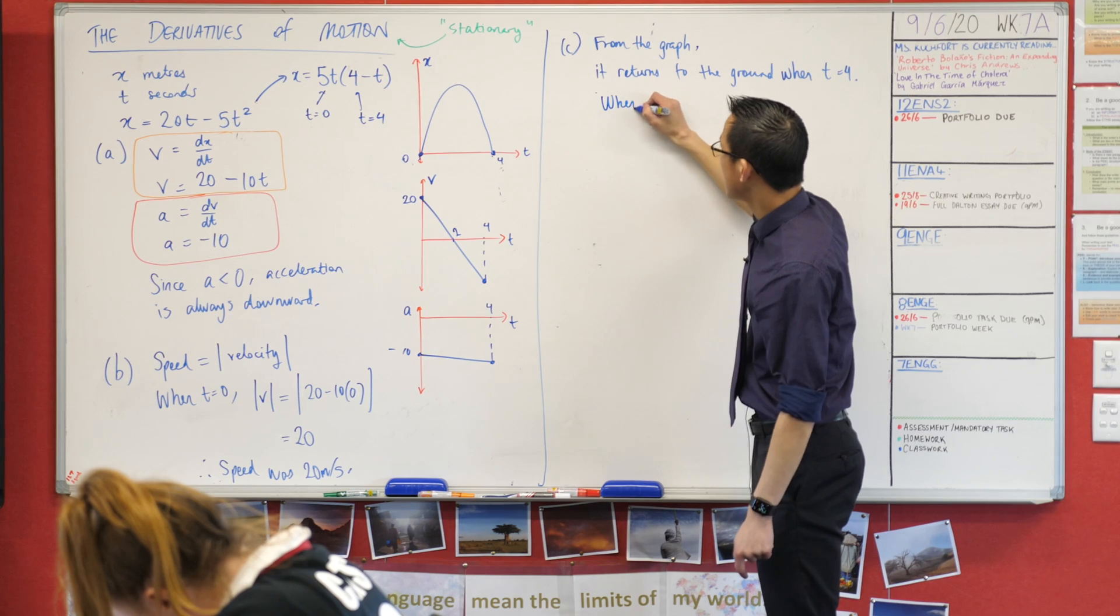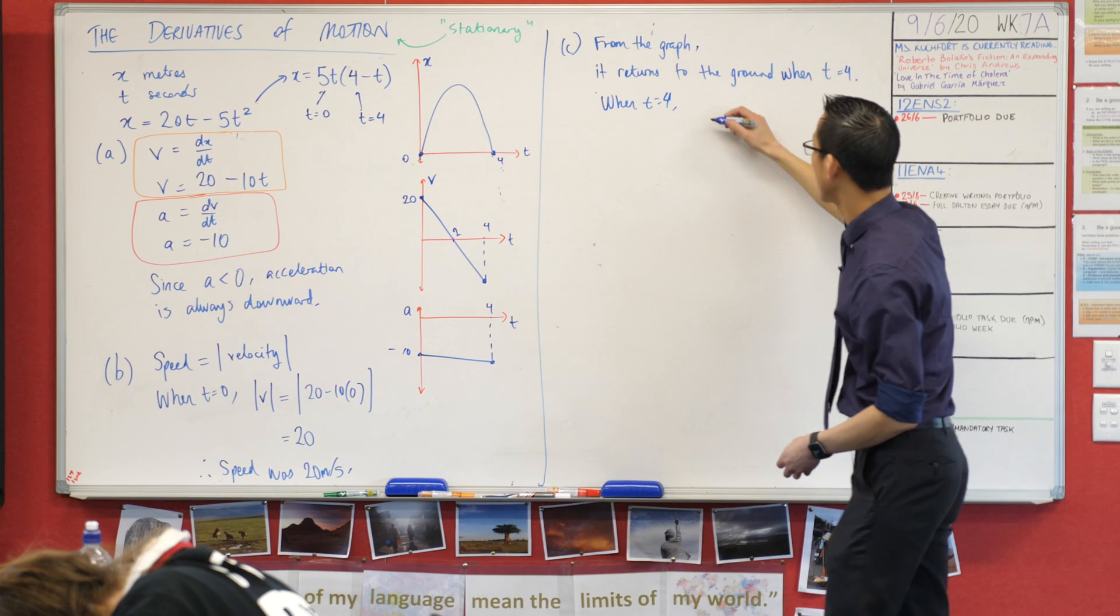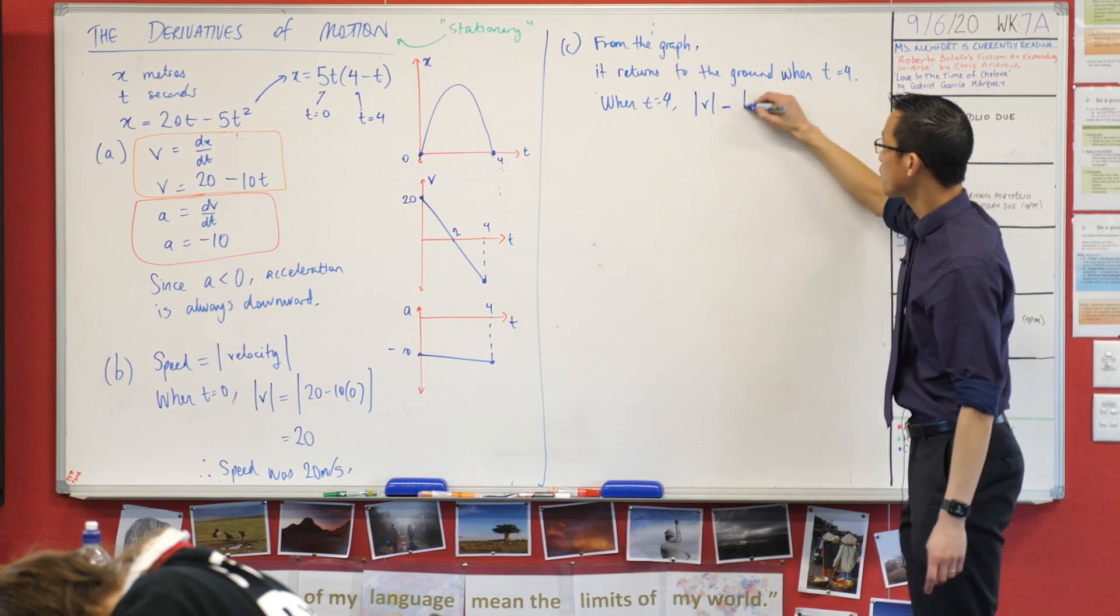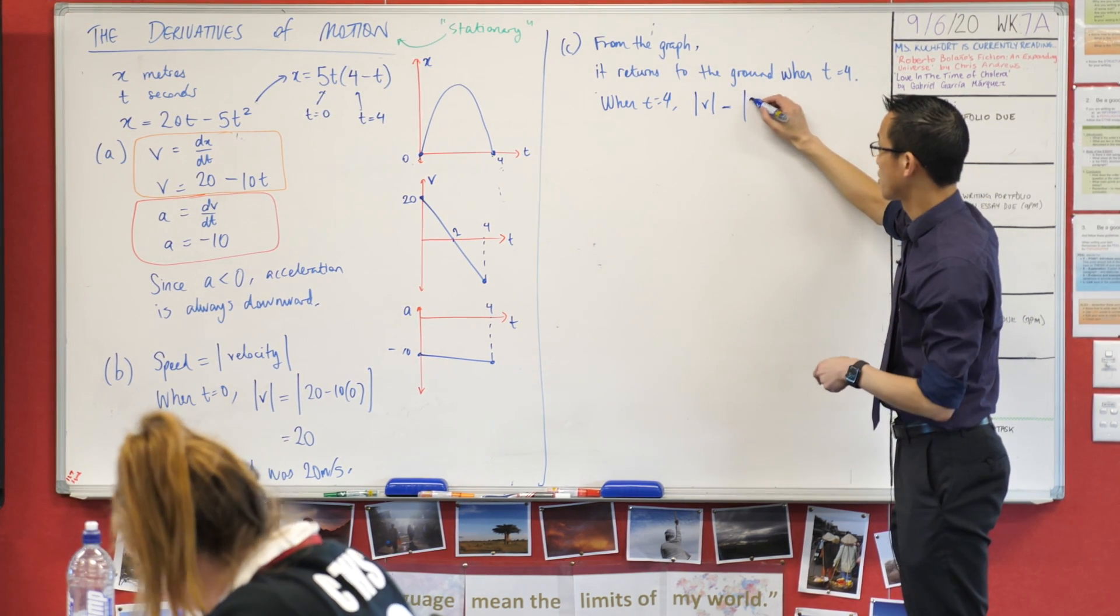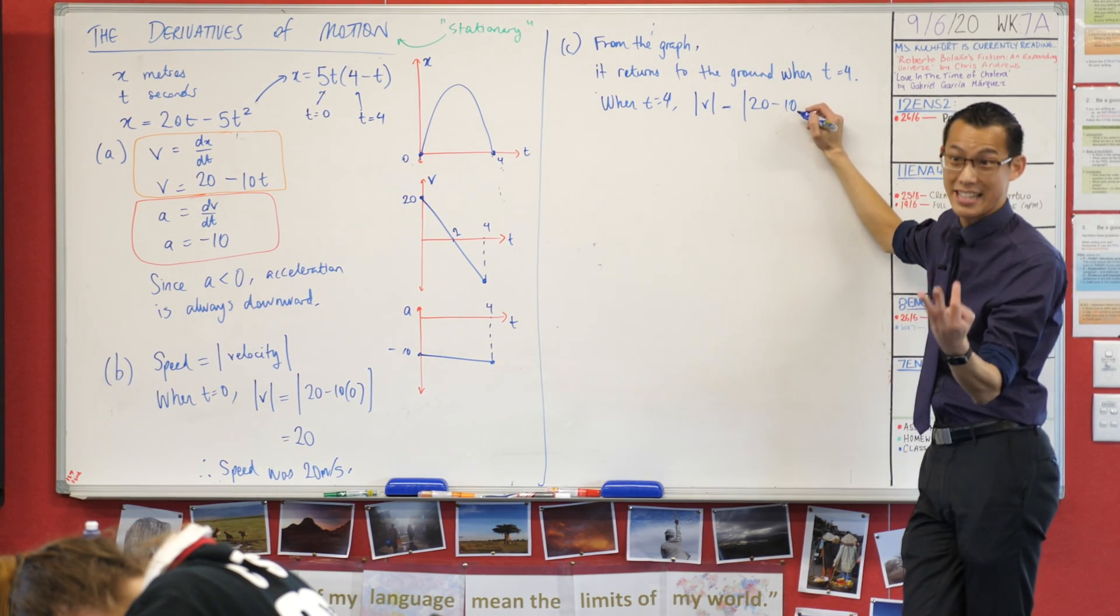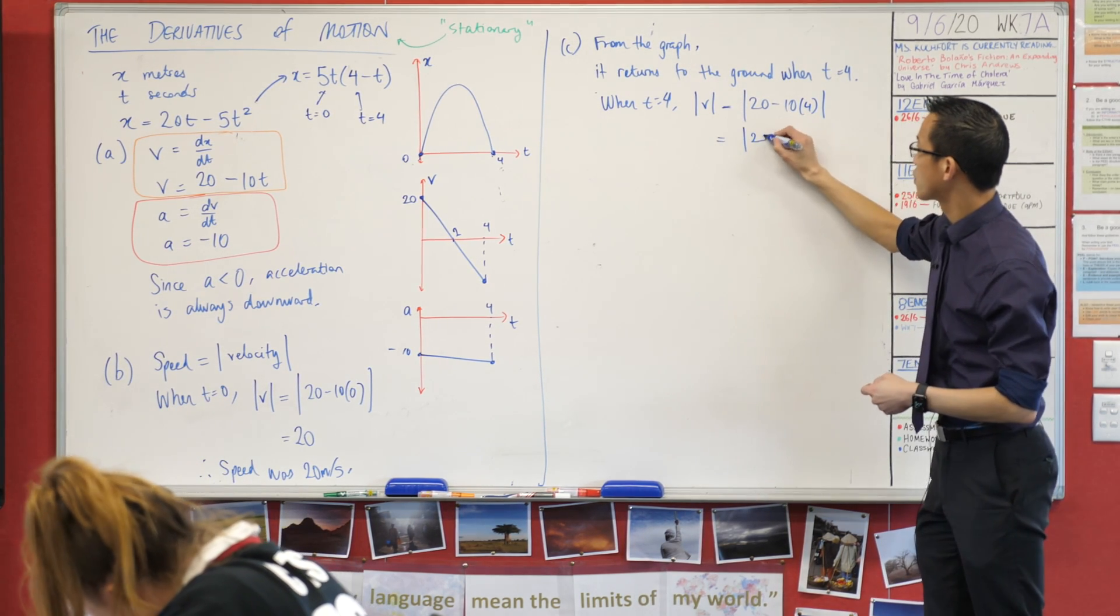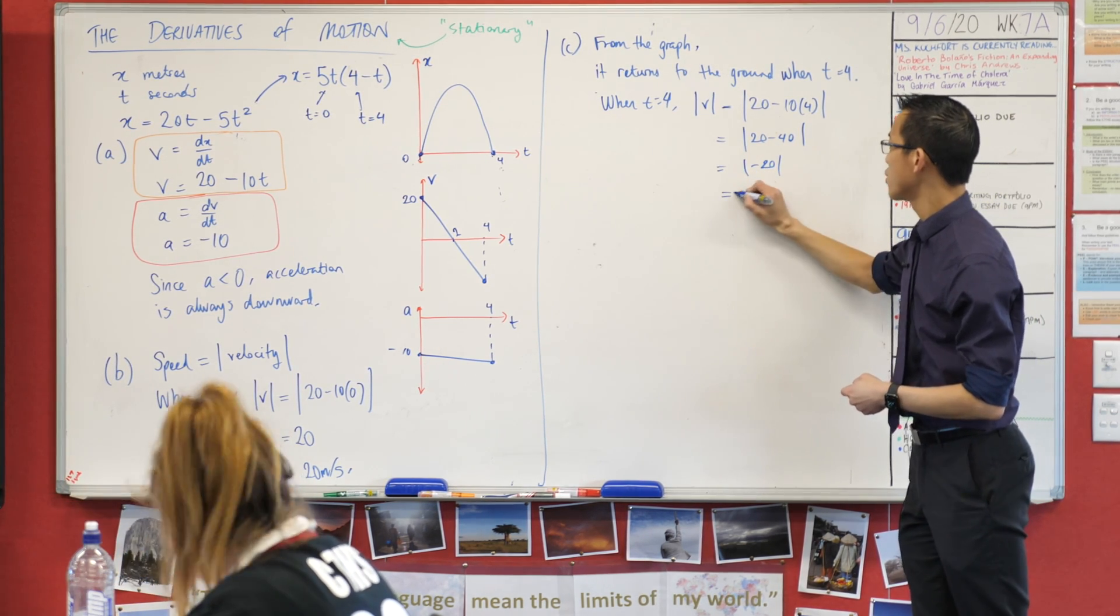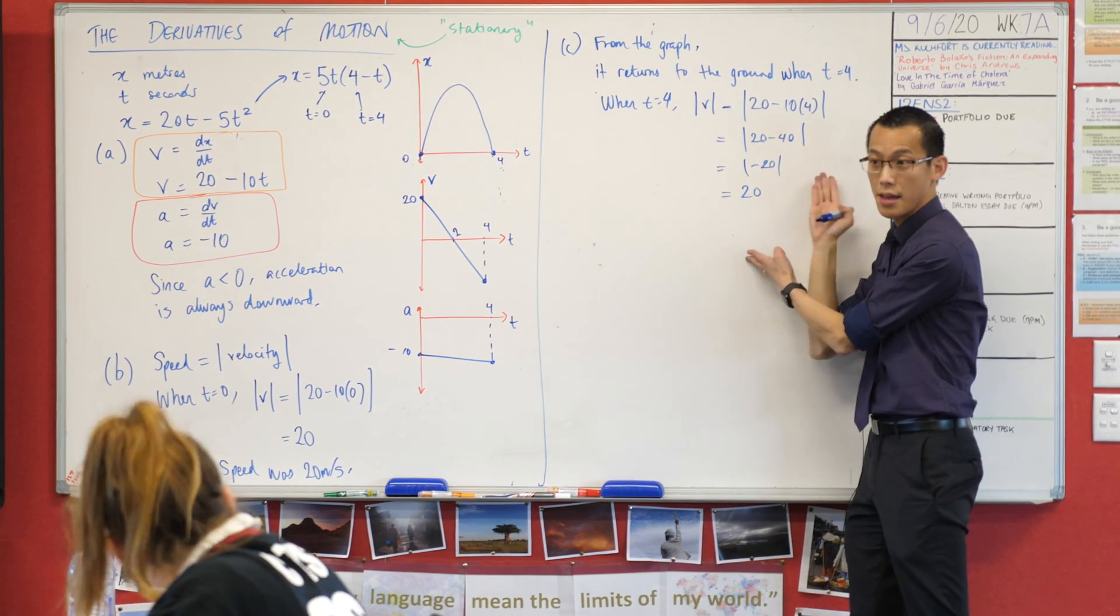So I'm going to say when t equals four and again we're asking about speed not velocity, so I'm going to put some absolute value signs around v to indicate I'm doing speed equals, then I'm going to go straight back to my velocity equation, it's 20 take away 10 lots of what? Four because that's the time I'm substituting in. So this is the absolute value of 20 take away 40, I'm going to get negative 20 in there, so you can see this is speed because that's why I applied the absolute value signs and you can see that's equivalent.